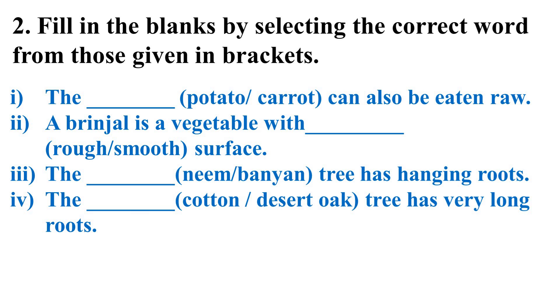Third, the dash — neem or banyan — tree has hanging roots. Fourth, the dash — cotton or desert oak — tree has very long roots. We will read the remaining story in the next class.